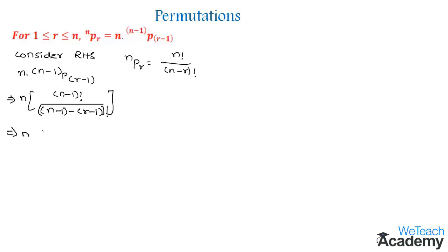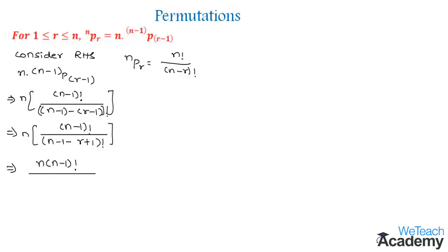We can write this as n into (n-1)! divided by (n-1-(r-1))!, which simplifies to (n-r)! in the denominator. By multiplying n with (n-1)! we get n factorial divided by (n-r)!. We know that this value is equal to nPr, which is the required term on the left hand side.